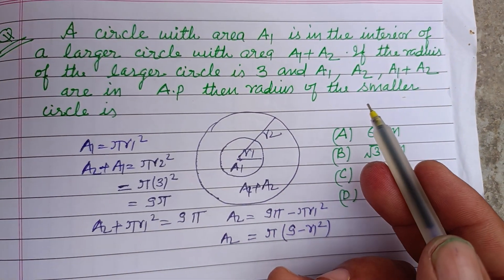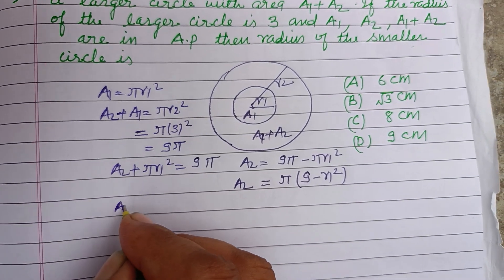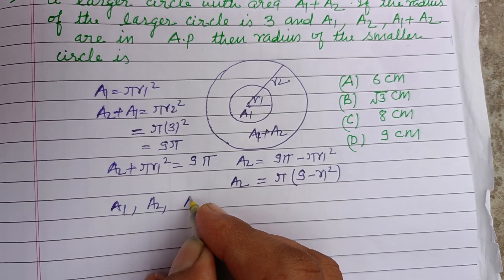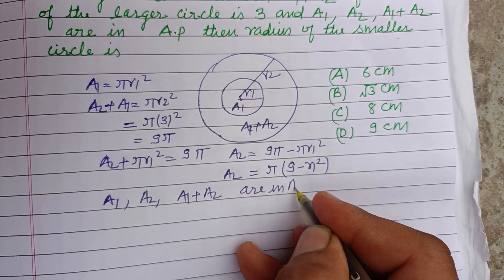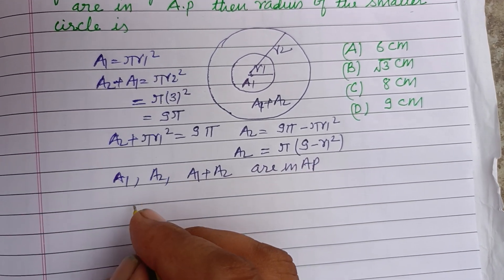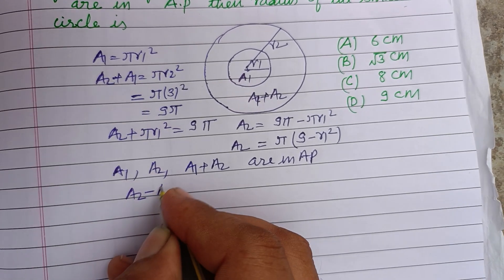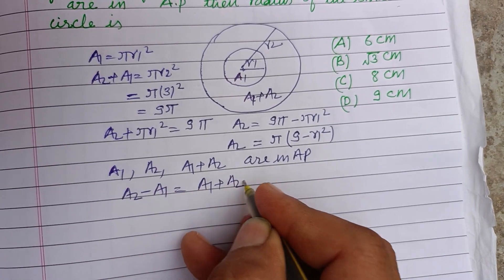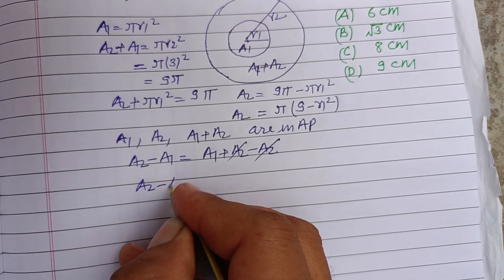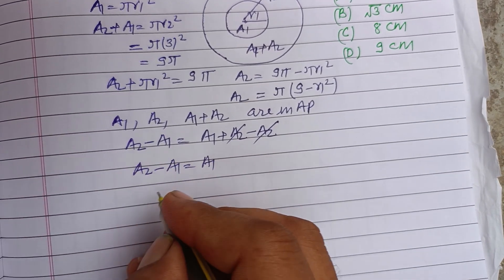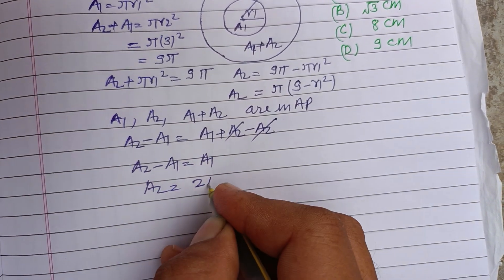Now the question is saying that A1, A2, A1 plus A2 are in AP. So the common difference A2 minus A1 equals A1 plus A2 minus A2. The A2s cancel, so A2 minus A1 equals A1, or A2 equals 2 A1.